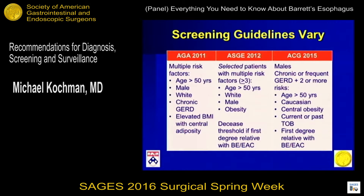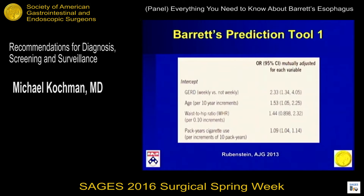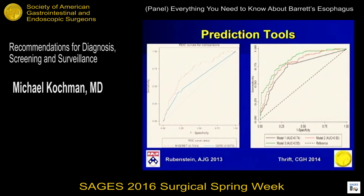The guidelines from the GI societies vary widely but share some commonality: age, gender, obesity, and family history are the critical components. Screening must use high-def white light. A paper from Rubenstein out of University of Michigan looking at a Barrett's prediction tool examined GERD, age, weight with waist-to-hip ratio, and pack years of tobacco. Thrift looked at a complex model adding on to each phase. When comparing them, each model as it becomes more complex becomes more accurate, but at the same time less applicable and harder to implement.